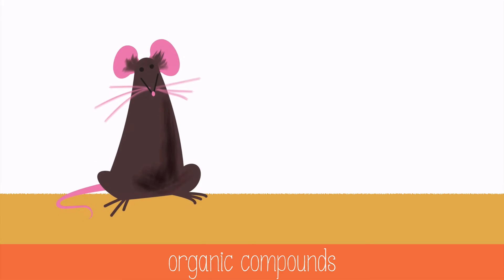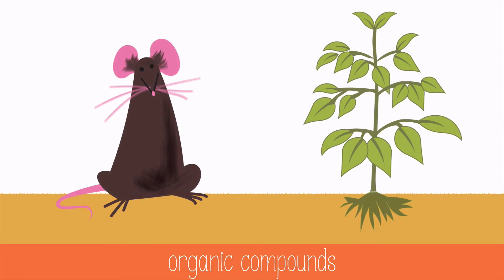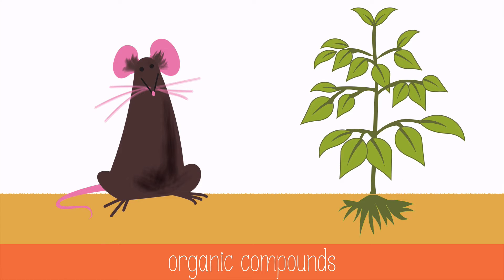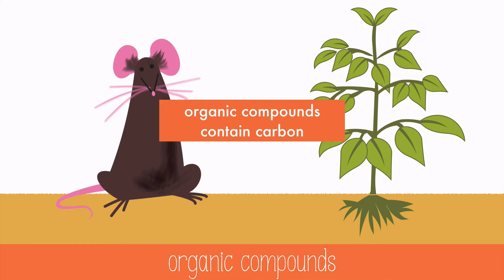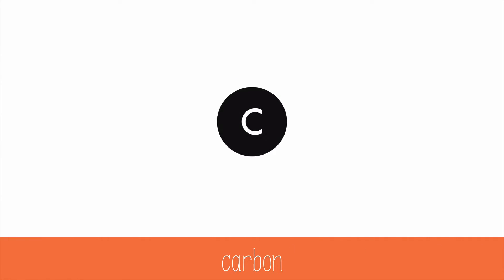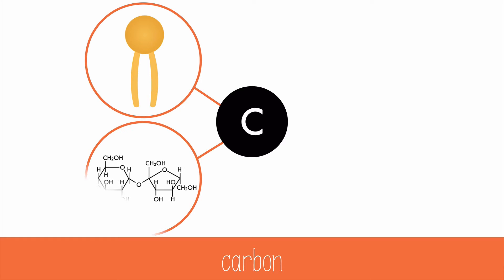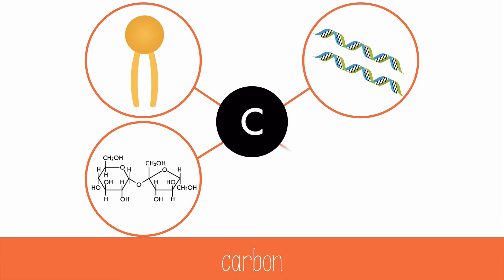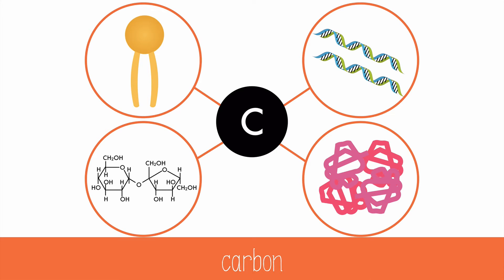Organic compounds make up all living things. Organic in science doesn't mean that it's made by hippies or grown without pesticides — organic just means that it contains carbon. Carbon is the backbone for lipids, carbohydrates, nucleic acids, and proteins. Any molecule with carbon, with the exception of carbon dioxide, is organic. Carbon dioxide is not considered to be an organic molecule because it has no hydrogen or other carbon atoms bonded to it.